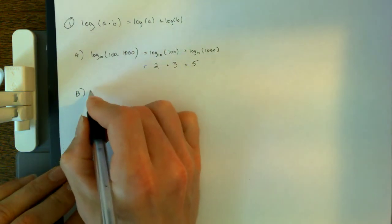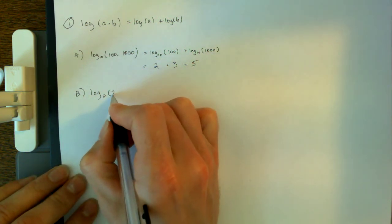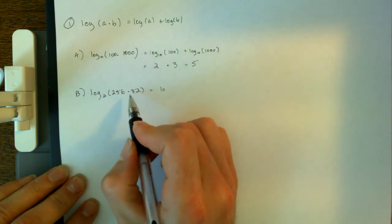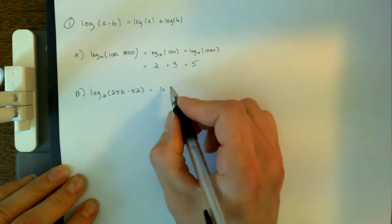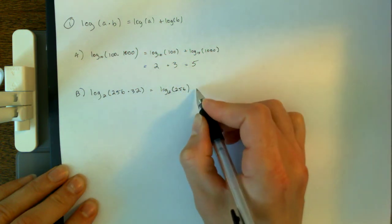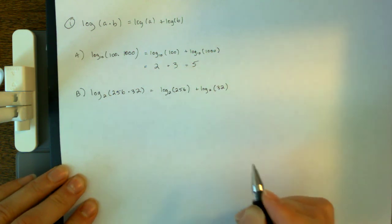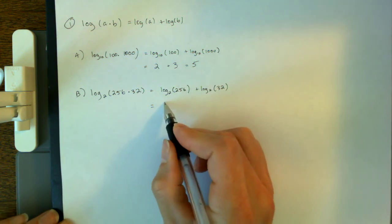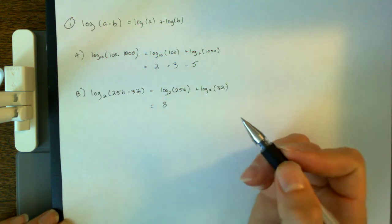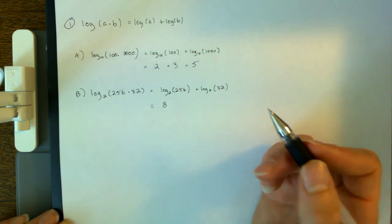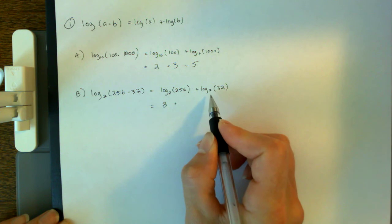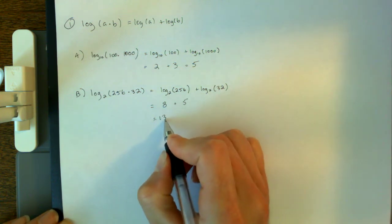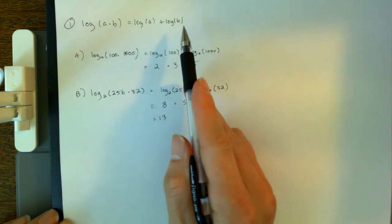Let's try another example right here. How about this? Log base 2 of 256 times 32. Well, this is the same thing. According to our rule, logarithm of the product of two numbers is the sum of the individual logarithms. So this is log base 2 of 256 plus log base 2 of 32. This number right here, what power do I need to raise 2 to in order to get 256? The answer is 8. And I always remember that because 8-bit graphics, 8 powers of 2, gets you 256 colors for my Nintendo days as a child. So that number is 8. This number right here, what power do I have to raise 2 to in order to get 32? Well, 2 times 2 times itself 5 times gets you 32. So this number is 5, and the answer is 13.